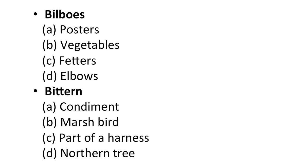Bilboes is the next word and choices are: A — posters, B — vegetables, C — fetters, D — elbows.